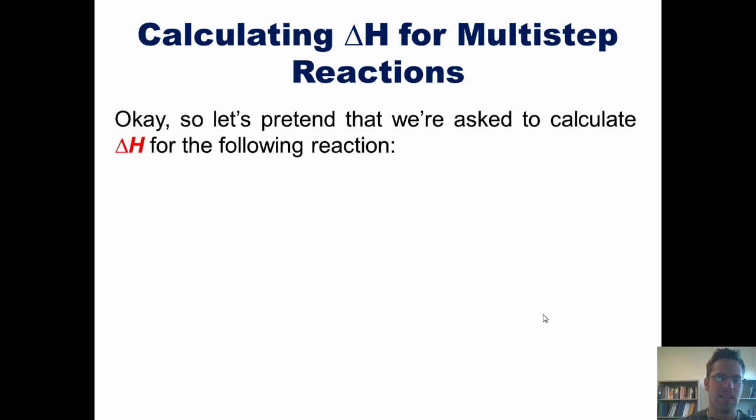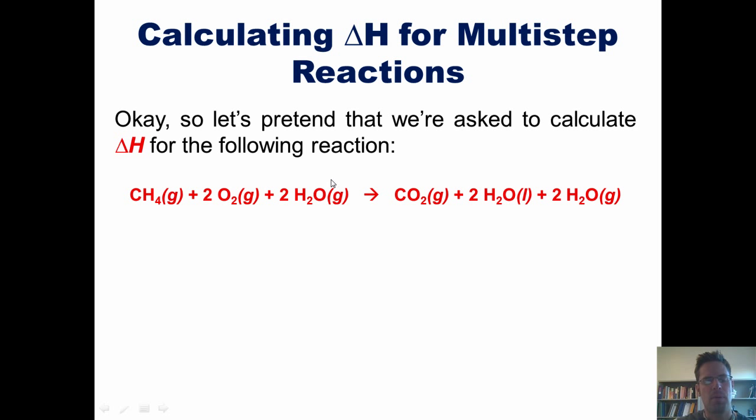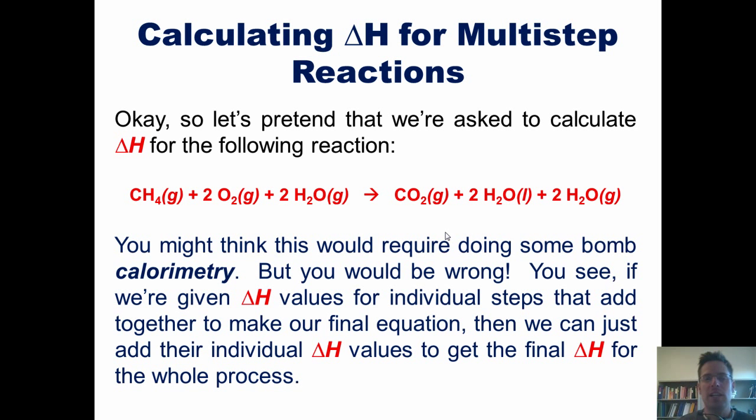Let's pretend that we're asked to calculate the delta H for the following reaction. Taking methane and combusting it in the presence of oxygen and water to form carbon dioxide and more water. In looking at this, you might be tempted to think that the only way we could measure the delta H for this process would be to use some type of bomb calorimetry. But if you think that, you would be wrong. You see, if we're actually given the delta H values for individual reaction steps that, when we add together, end up giving us the final equation shown here, then we can just add together the individual delta H values for each of those individual steps and get the final delta H for the whole process.